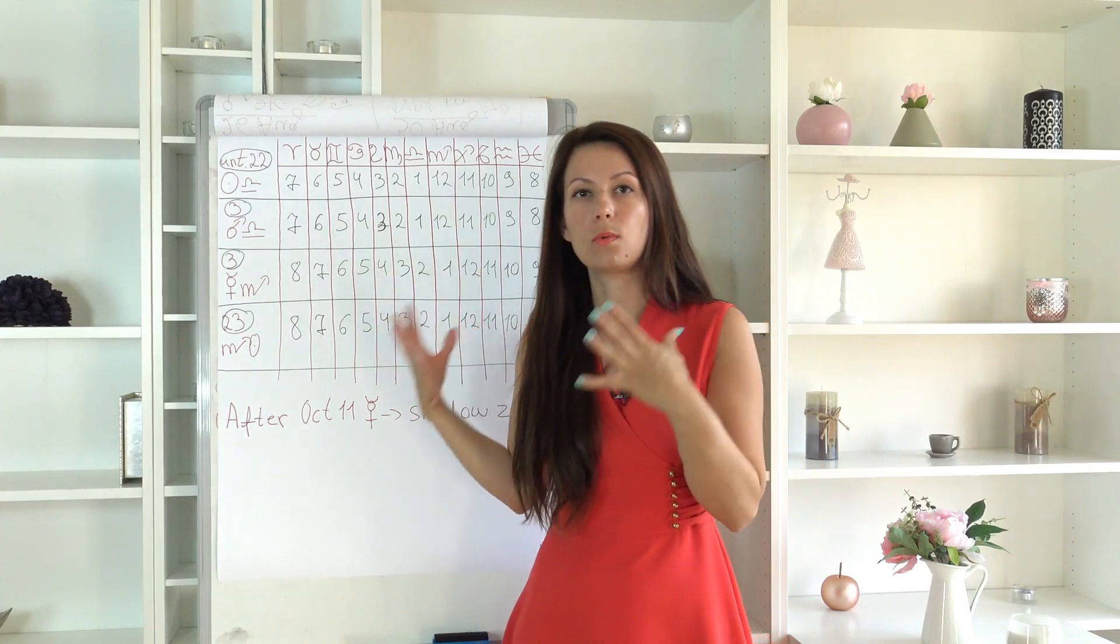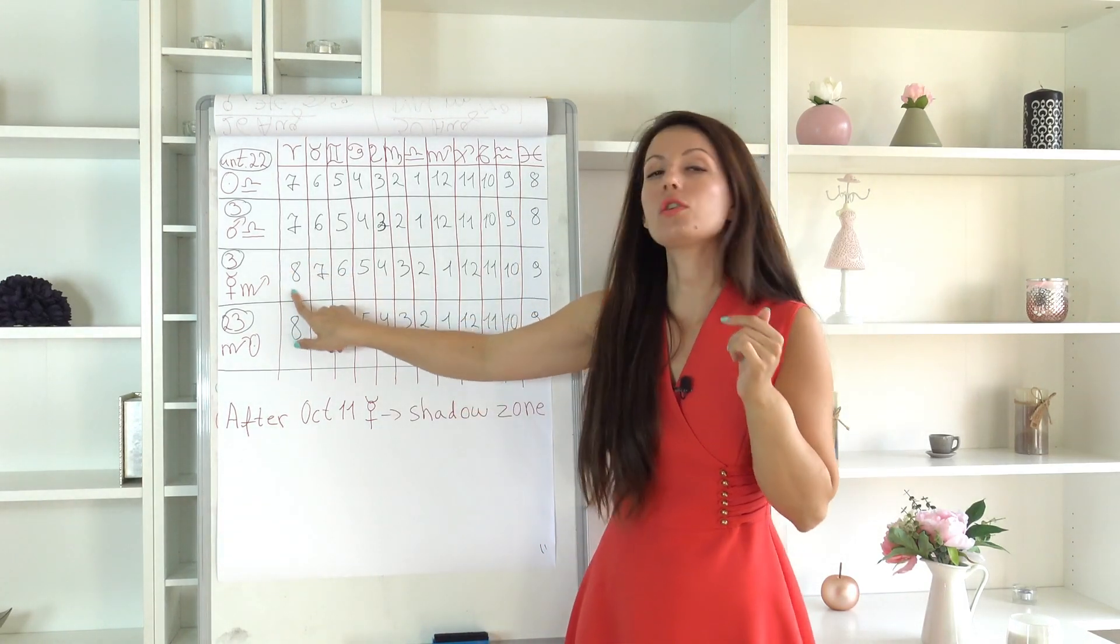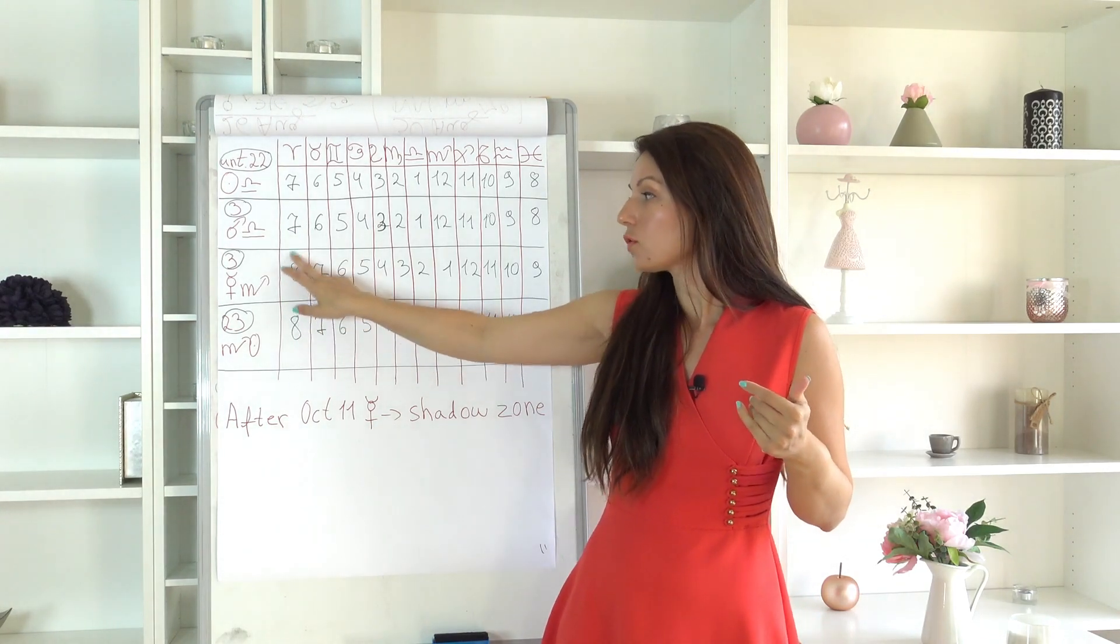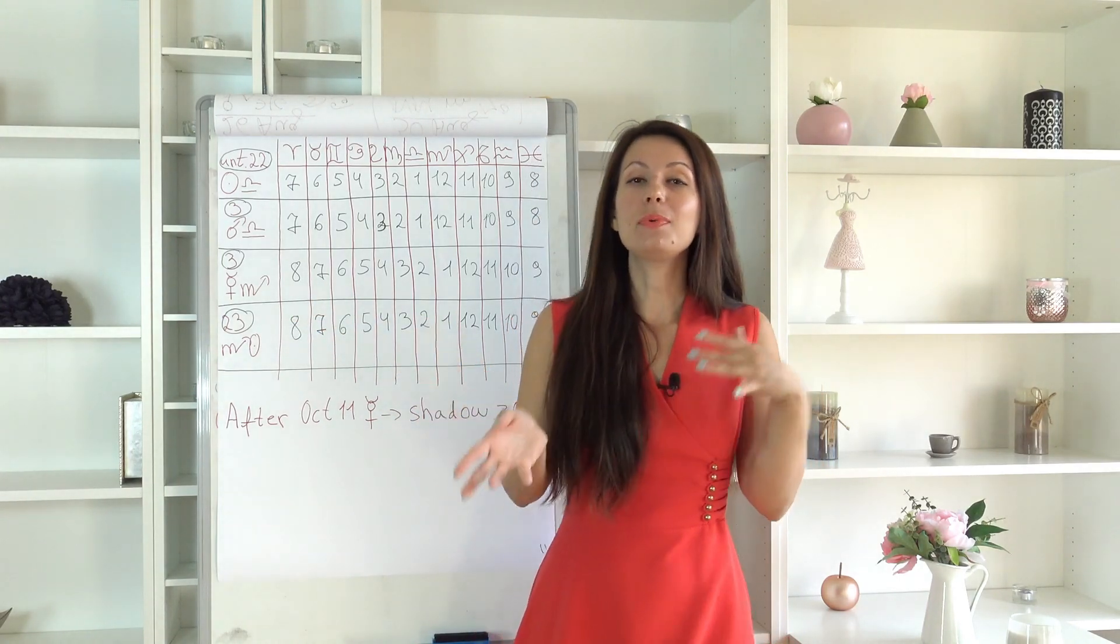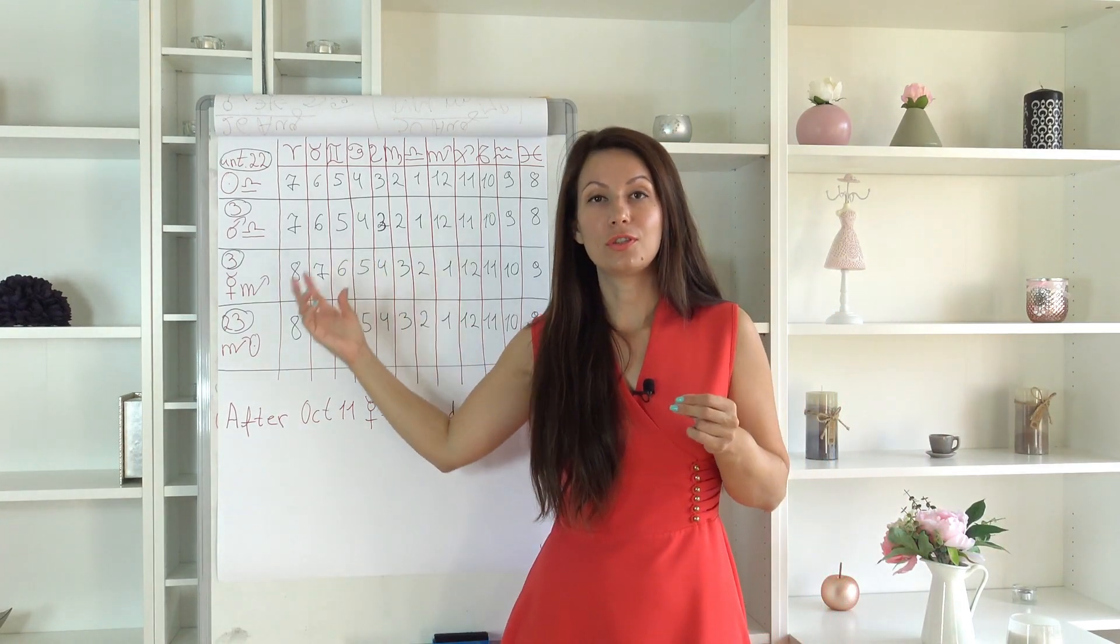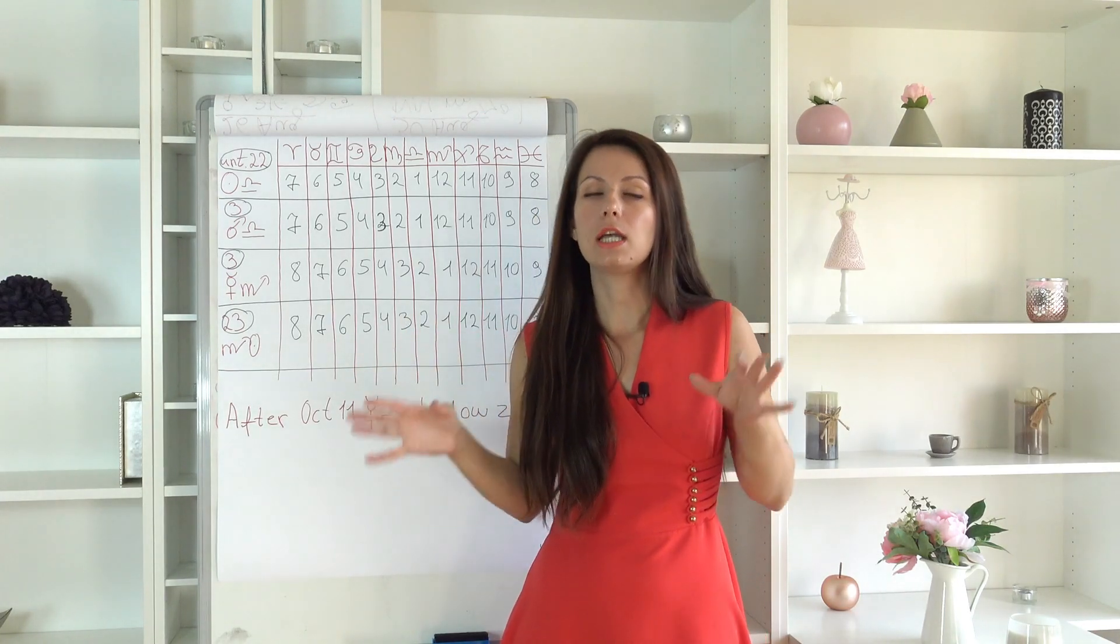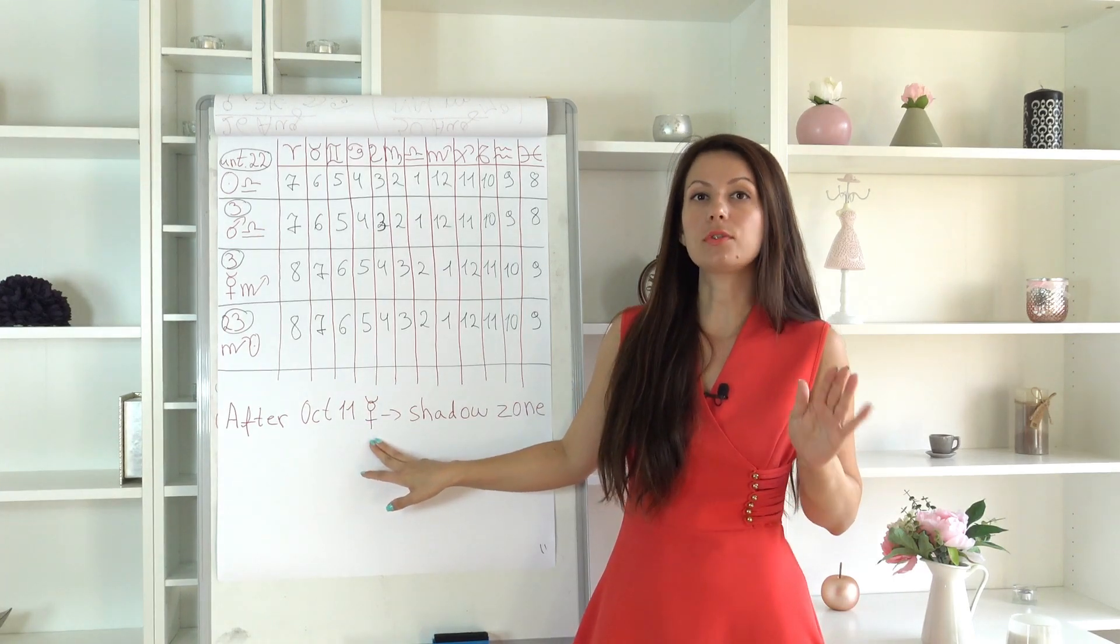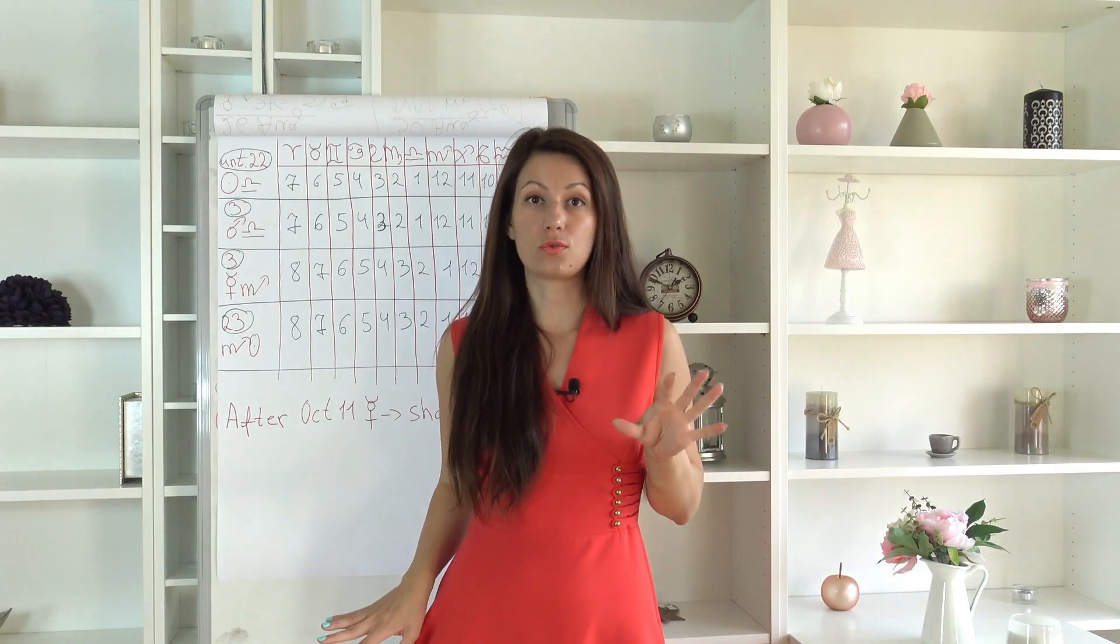The shadow zone doesn't mean that there will be problems. It means that what you are concentrating on or doing or planning in regards to finances, mutual finances and investments might be reconsidered or changed after this month, basically during November when Mercury goes retrograde. So this is just kind of a preparation for us after the 11th of October. Remember, Mercury is not retrograde yet.